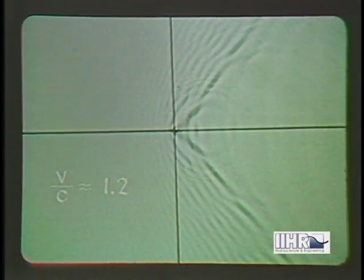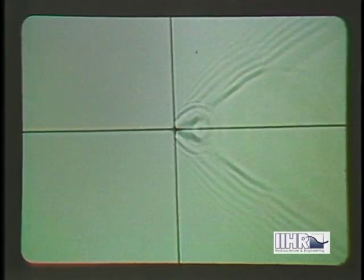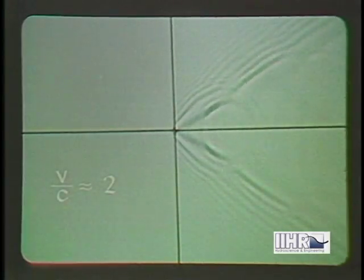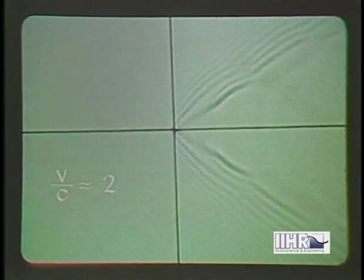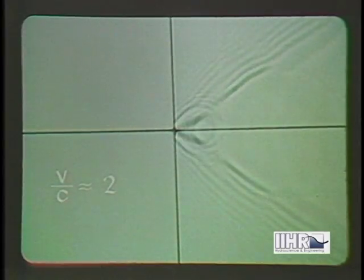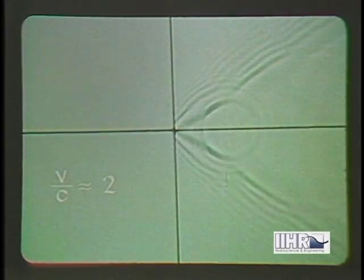Still further increase in the velocity of the flow will cause all portions of the wavelets to be carried downstream. The lines of tangency, subtending an angle which becomes smaller and smaller than 180 degrees, as the ratio of fluid velocity to wave celerity increases above unity.